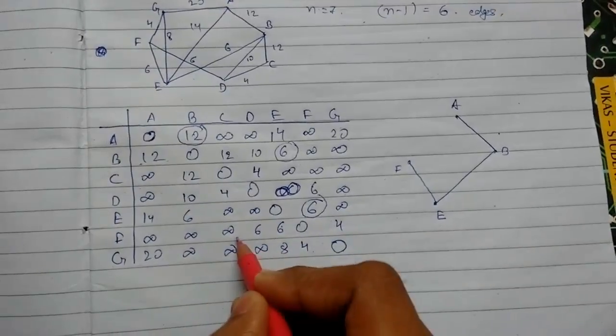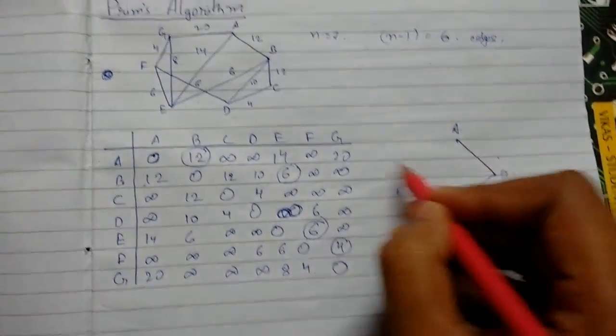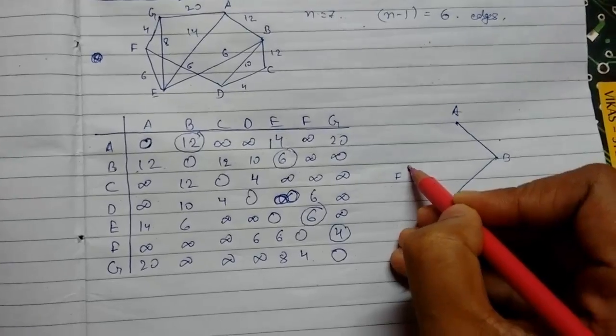So now we'll go to F. Now the minimum is 4, F to G. This will be something like this.